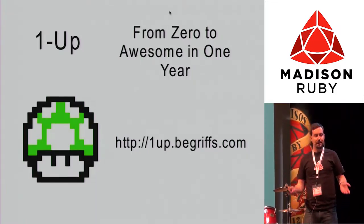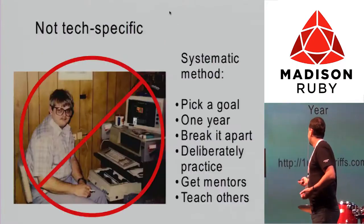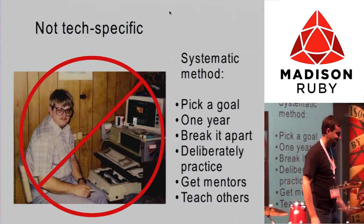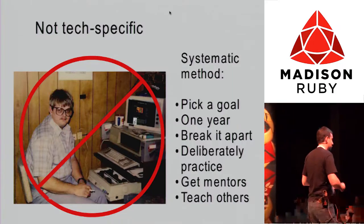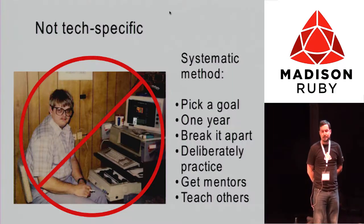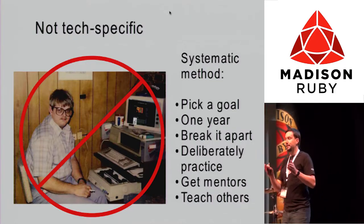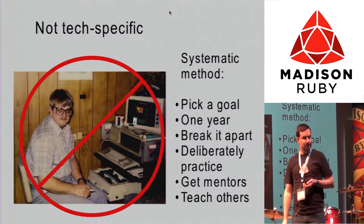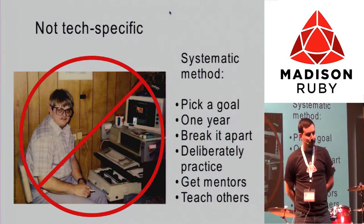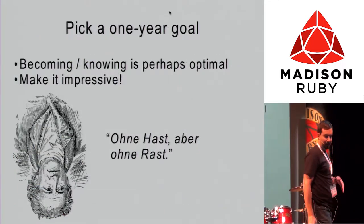It's applicable to any goal. My goal is to become a world-class developer in one year, but it's really just for anyone. The general overview: you pick a goal, give yourself a year, break the year into intervals — for me, two-week intervals — pick some topics you want to hit for two weeks, practice deliberately, get mentors, and teach others.